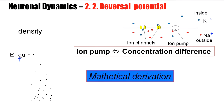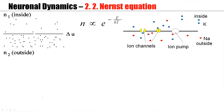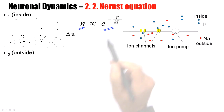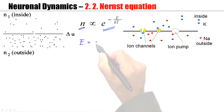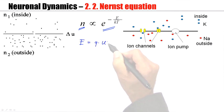The dependence upon the energy is exponential. This dependence is called the Boltzmann distribution. I will now show that from the Boltzmann distribution you can derive how a concentration difference gives rise to a voltage difference. So let's start from the Boltzmann distribution and note that the energy for charged particles is q times u.